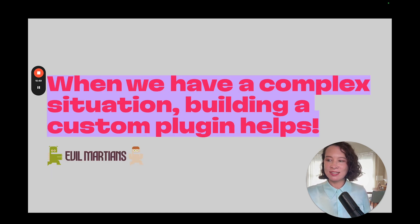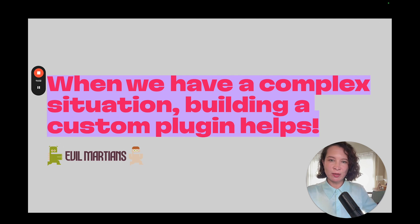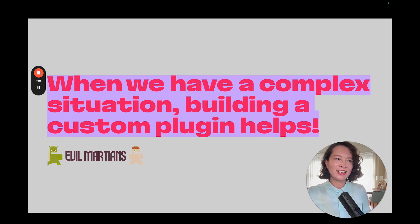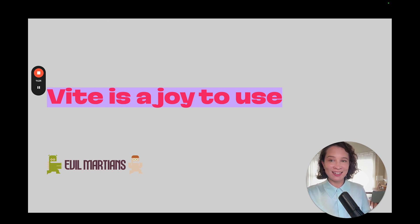Vite combines the best of Rollup and ESBuild. At Evil Martians, we also love the ability to build plugins — when we have a particularly complex situation, like loading assets from inside certain gems, we can always write a custom plugin and it's a maintainable solution. And finally, Evil Martians customers and people in the community say that Vite and Vite Ruby are a joy to use, and that says everything.